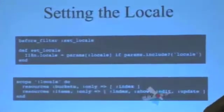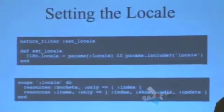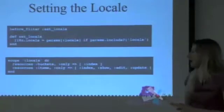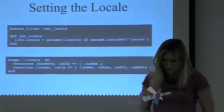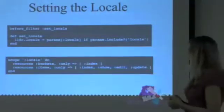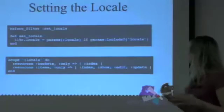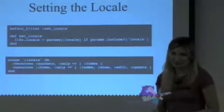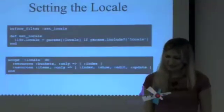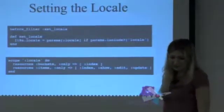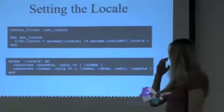Setting the locale — this is basically how you tell your app which locale to serve up. You can use a before filter in the application controller. What I find the easiest way is just to include it in the URL — you can do slash 'en', or you can use a subdomain with your locale code. And then in your routes file, just include a locale scope and that will ensure that the locale is passed along with your named routes.